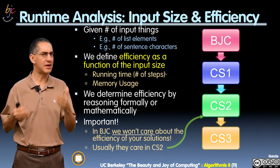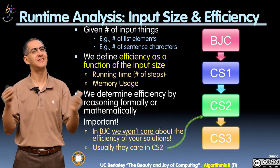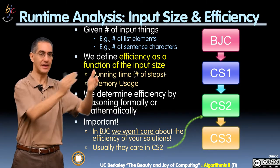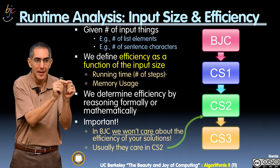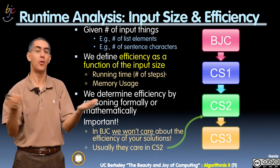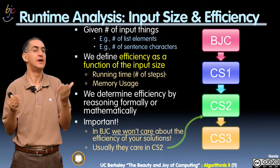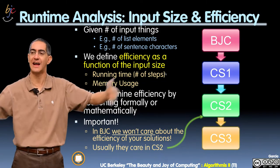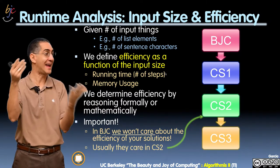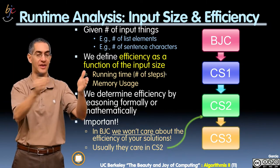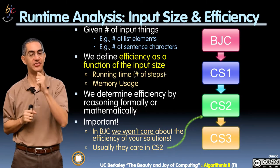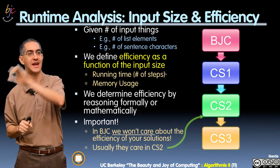So what are you counting based on? Well, we're counting based on the size of the input. The input size, if it's a list, is clearly the number of elements in the list. But maybe you're doing something about strings — about a sentence — and you're processing each letter. Then it'd be the number of letters in your sentence. So it's whatever kind of size is natural for your problem. We're going to call that n — either the number of elements in the list or number of characters in a string.